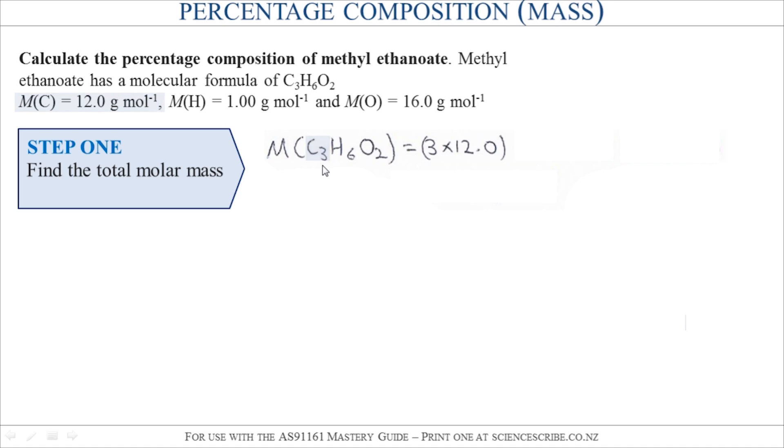So I've got three carbons in there so I should have 3 × 12. I've got six hydrogens there so 6 × 1 grams per mole, and there are two oxygen atoms in there so that's 2 × 16 grams per mole.